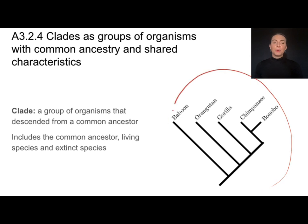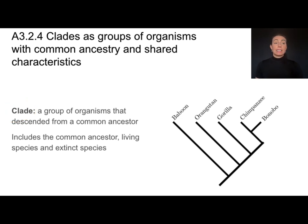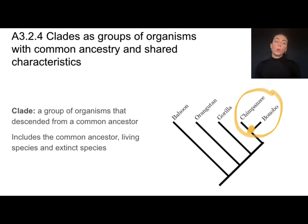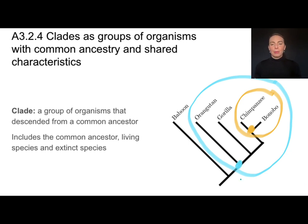This type of diagram is called a cladogram, and within it we can find groups called clades. Clades are groups of organisms that descended from a common ancestor; they include that common ancestor and all species that descended from it, whether living or not. Clades can be big and general, or small and specific. A clade always includes the common ancestor and all descendant species.